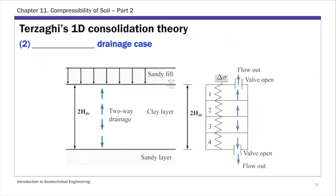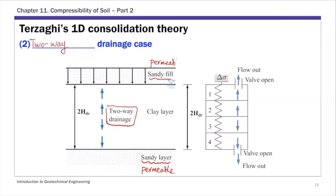For the second case — two-way drainage — the thinking behind the solution is still the same: if you can predict the pore water pressure profile, you can link that to consolidation settlement. The difference here is that you have a sandy layer at the bottom and a sandy layer on top, so water can drain both ways. Sandy layers immediately tell you it's a permeable layer, because water can drain through them.